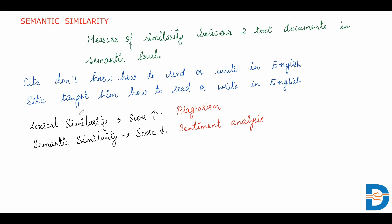Semantic similarity has a wide range of applications — text summarization, information retrieval, and sentiment analysis are all examples where you look for semantic similarity. A simple real-world example: when you search on Google, you are always looking for relevant information. Google tries to find relevant articles or relevant information by finding the semantic similarity and giving you the required output.